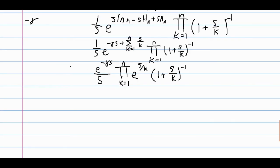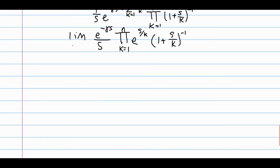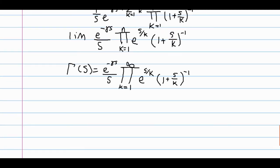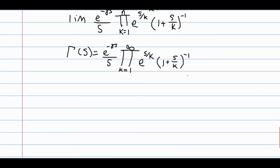So now we have the limit as n goes to infinity, and in all we get this representation of the gamma function: e to the negative gamma s over s, times the infinite product of e to the s over k times 1 plus s over k to the negative first power. In the next video I will be showing the digamma function and probably use this representation to get some more properties. Thank you for watching, and I'll see you in the next videos.